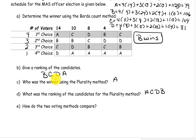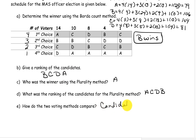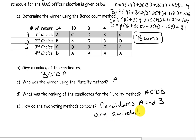So the rankings here — the middle two candidates stayed the same, but the first and last place candidates were switched. With the plurality method, candidate A was the winner and candidate B was in last place. But with the Borda count, candidate B is in first place and candidate A is in last place. So candidate A and B are switched. That's it for this example — let me know if you have any questions, and I hope you're having a great day. Thanks.